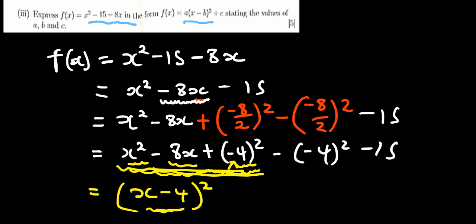And then on the other side, what do we have? On the other side, we have minus. So what is minus 4 squared? It is 16 and then minus 15. So it means our final answer there will just be x minus 4 squared minus 31.